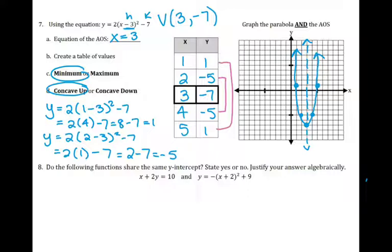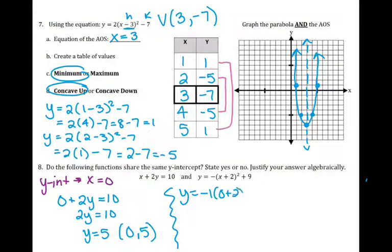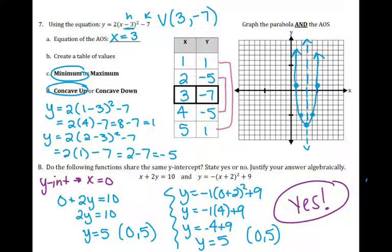Number eight: do the following functions share the same y-intercept? State yes or no and justify your answer algebraically. Anytime you are trying to find your y-intercept, that is when x equals zero. For both expressions I'm going to plug in zero for x. For the linear function: 2y = 10, so y = 5; the y-intercept is (0, 5). For the quadratic, plugging in zero for x gives me -1(0 + 2)² + 9: zero plus two is two, two squared is four, so -4 + 9 = 5. Both y-intercepts are (0, 5), so yes, they share the same y-intercept. We solved it algebraically by putting in zero for x.